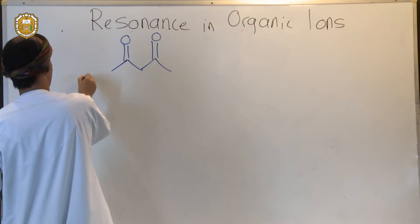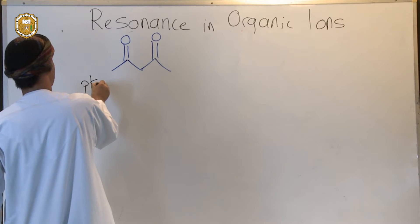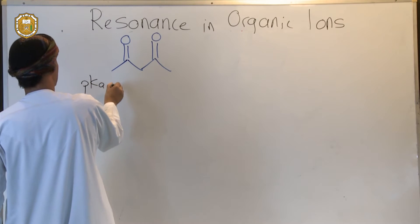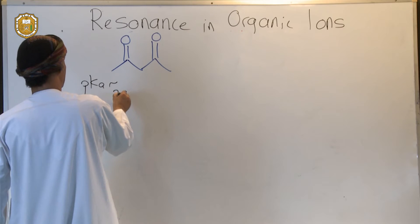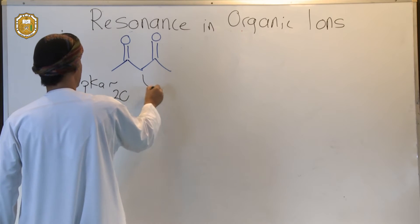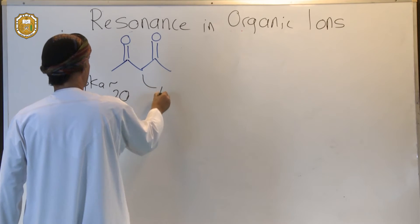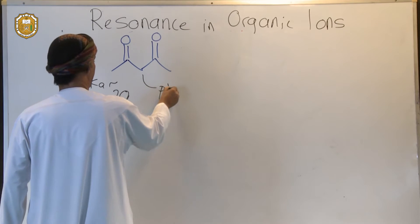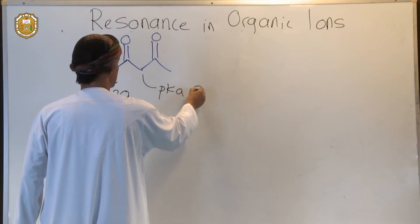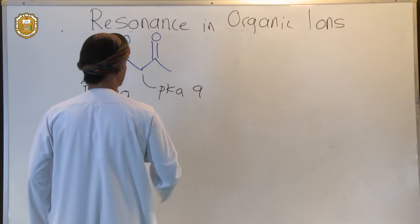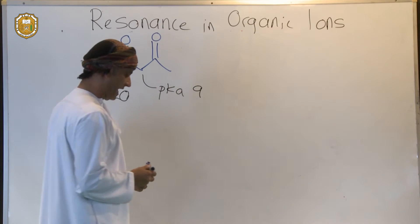The pKa at the normal alpha position is about 20, but the pKa at the position flanked by the two carbonyl groups is about 9. But why is that?